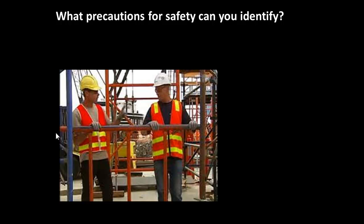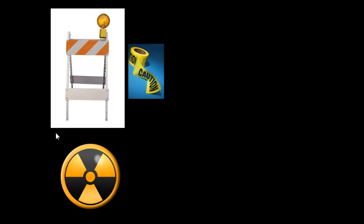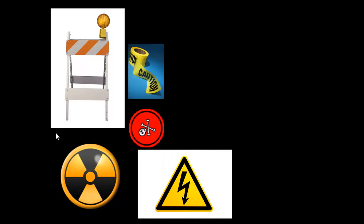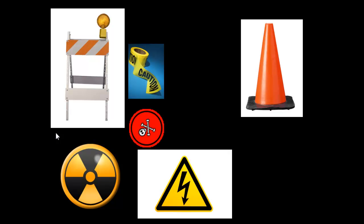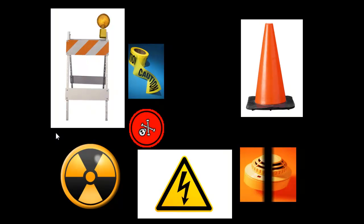Here we can see a situation where precautions have already been taken. You should be able to identify at least two very obvious precautions taken for safety. So what do we do to make people aware? We can erect barriers, or use tape to create a barrier. We can use warning signs — this one stands for radioactivity, this one stands for hazardous chemical, and this one stands for high voltage. We can use cones to restrict access to areas, and we can use devices such as smoke alarms and carbon monoxide alarms to warn us of potential hazards.